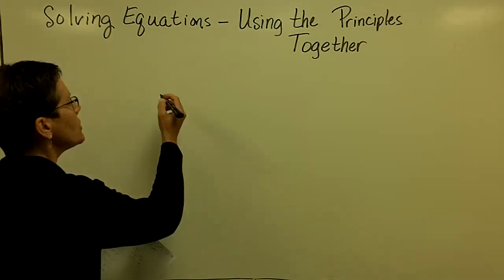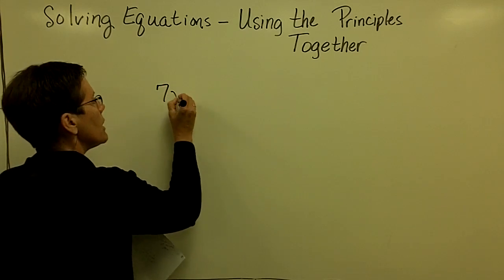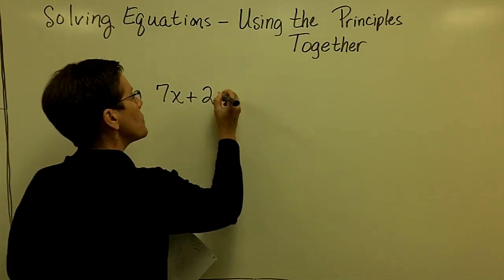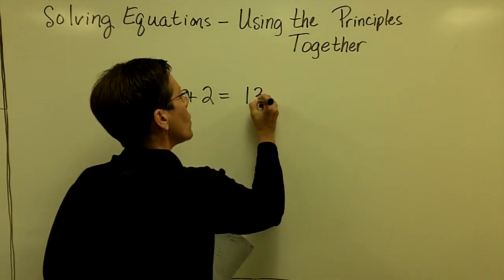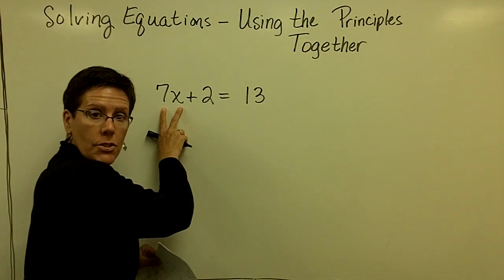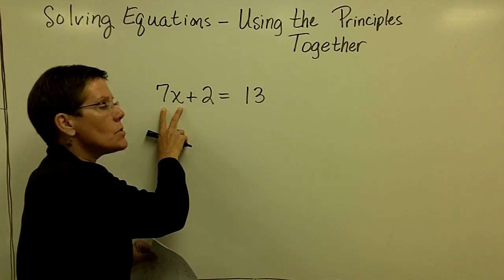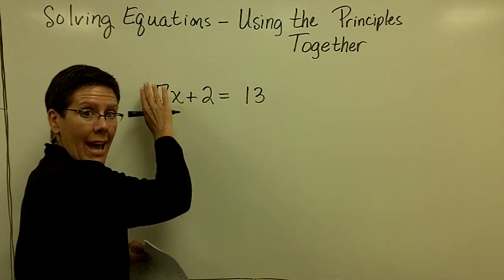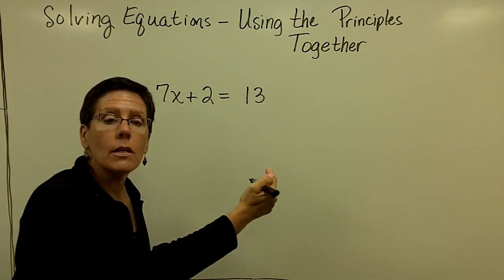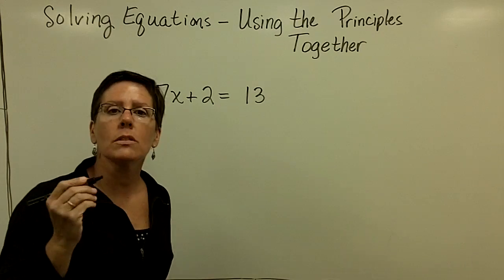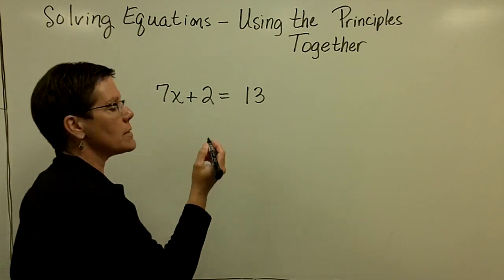The first problem or two that I'd like to share with you, I'm going to have two terms on one side, and my goal is going to be to isolate the term that contains the variable. So I would like to get the 7x alone, and it's got a plus 2 attached to it. So the way to get rid of the plus 2 is to subtract 2 from both sides of the equation.